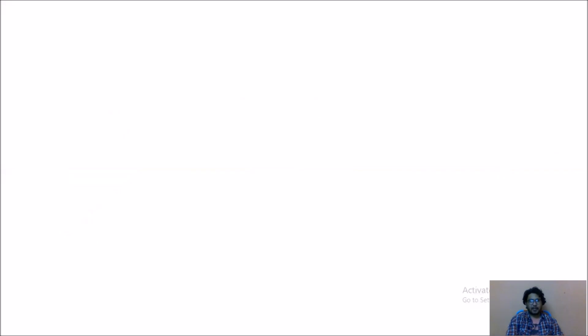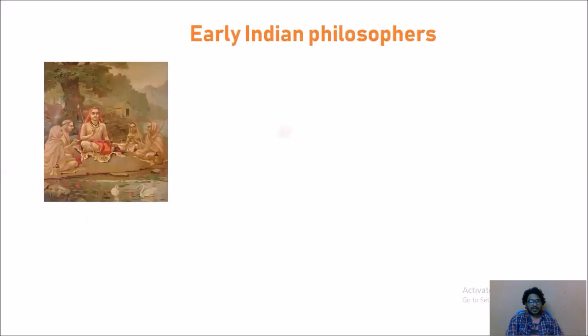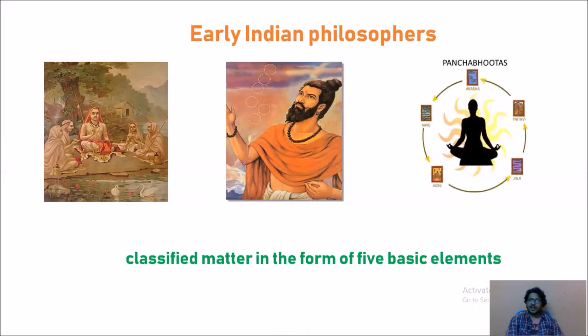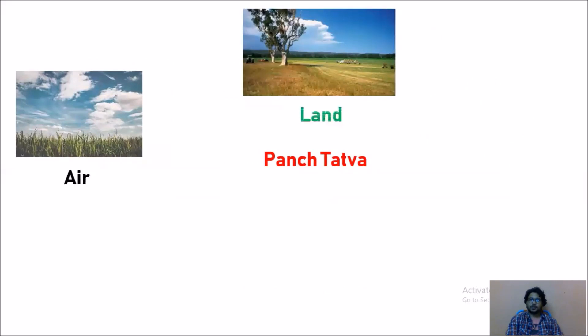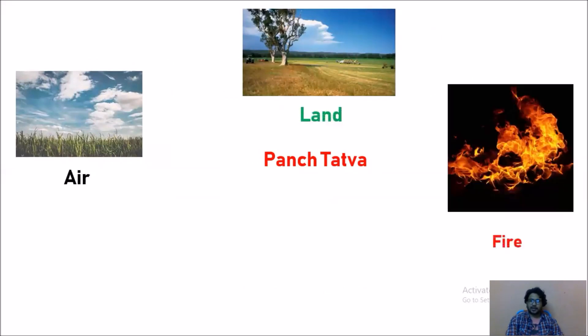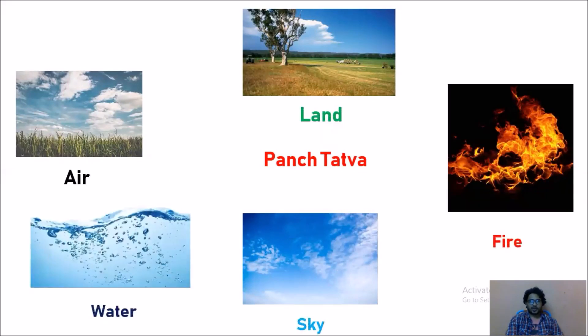Since early times human beings have been trying to understand their surroundings. Early Indian philosophers classified matter in the form of five basic elements known as pancha tattwa. Pancha represents five and those philosophers told every matter in this universe is made up of those five basic elements: air, land or earth, fire, sky, and water.